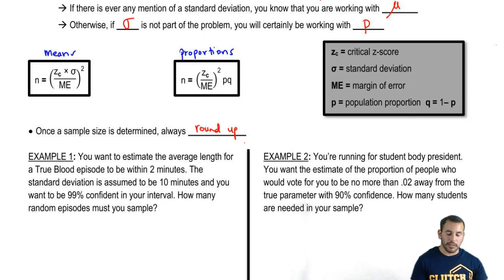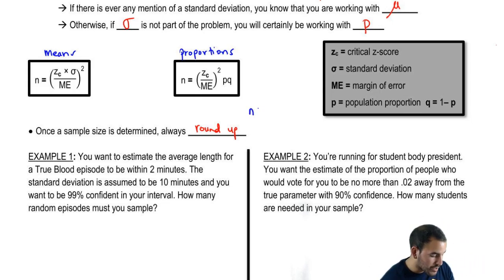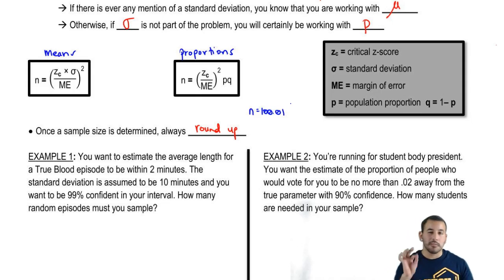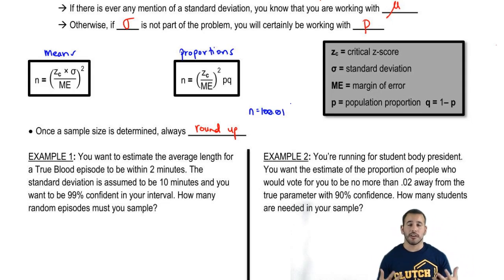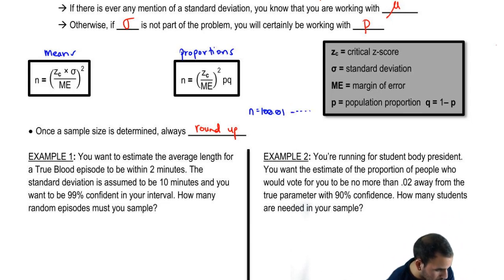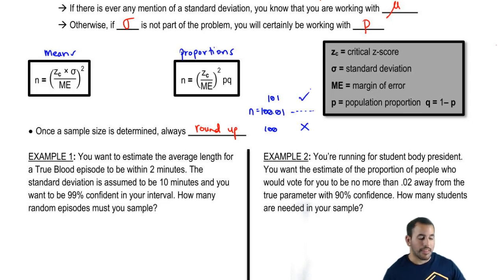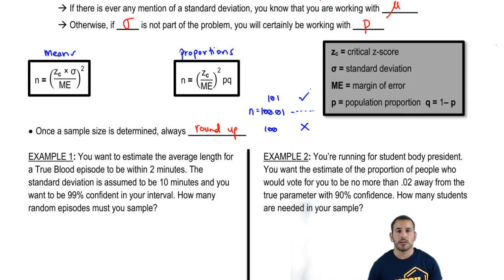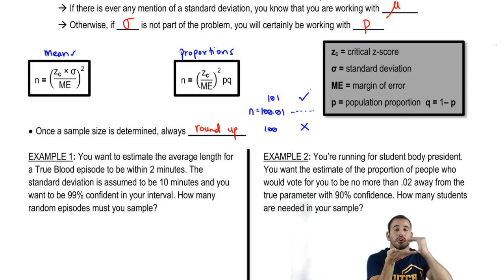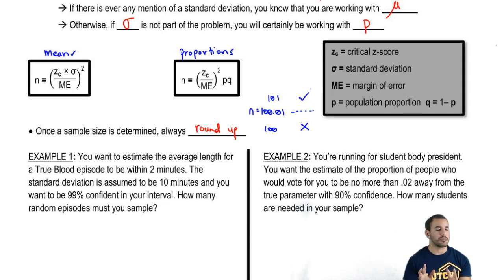Once the sample size is determined, you always round up. Why? If the minimum sample size is 100.01, that's the minimum needed to create the confidence interval at that level of confidence. If you round down to 100, that doesn't make the cutoff — so you have to go to 101. Also, with samples, you can't have 3.2 babies; if your answer is a decimal, round up to the next whole number because that decimal is the minimum. Rounding down doesn't meet that minimum.